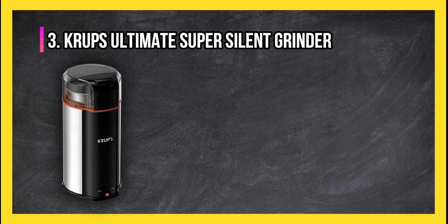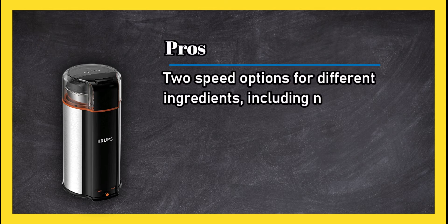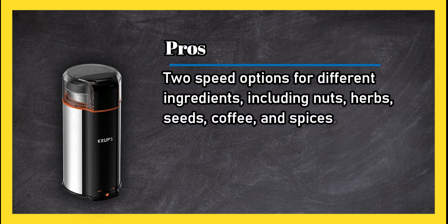Pros: Two speed options for different ingredients, including nuts, herbs, seeds, coffee and spices. Grinds with one touch. Lid and removable bowl are dishwasher safe.